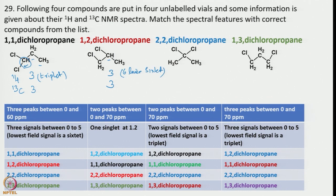Now let us look at 2,2-dichloropropane. There is a C2 axis of rotation, so only half the molecule needs to be considered. These two methyl groups are identical, giving only one signal, and there are 2 carbon signals total. This is unique compared to the rest because the others have 3 signals each, while this has only 2.